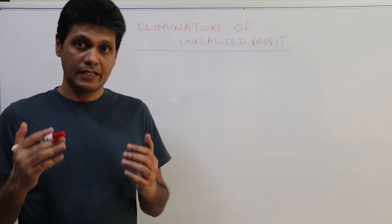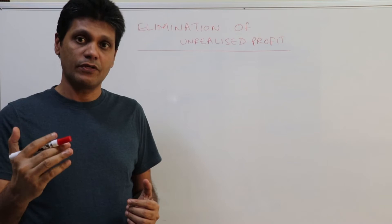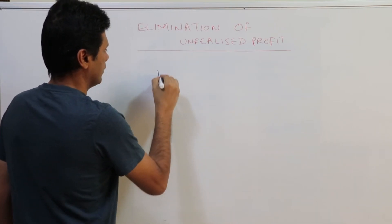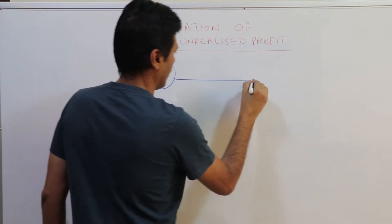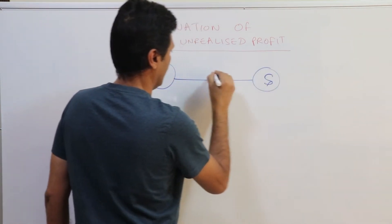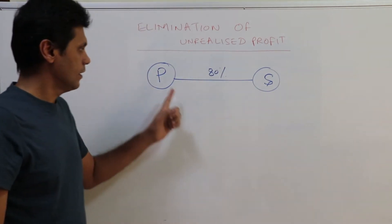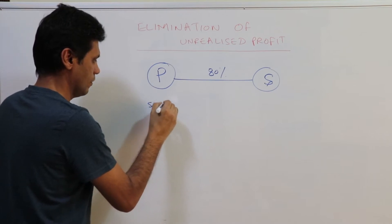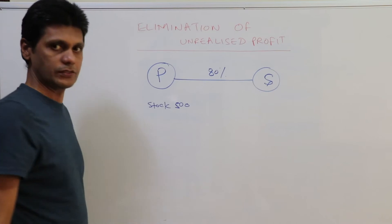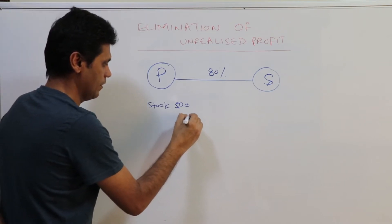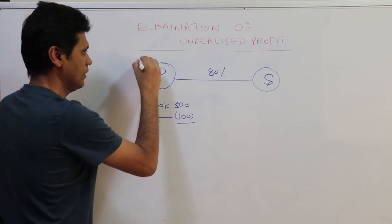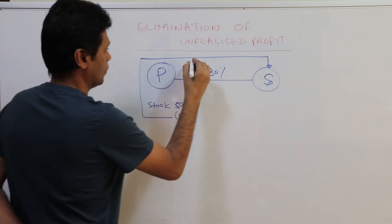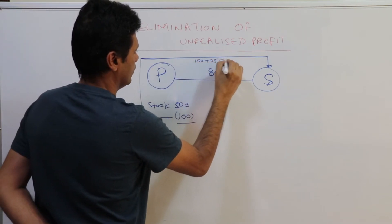Let me take an example to explain the process. Let's assume P company has acquired S company's 80% of shares. P is the parent company, S is the subsidiary company. P had stock worth $500, and out of that, $100 worth of goods were sold to S company with a profit margin of 25%, making the selling price $125.